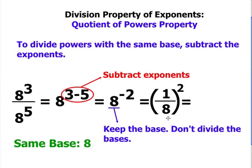So 1 over 8 squared means 1 over 8 times 1 over 8. Your answer should be 1 over 64. Hope that was helpful.